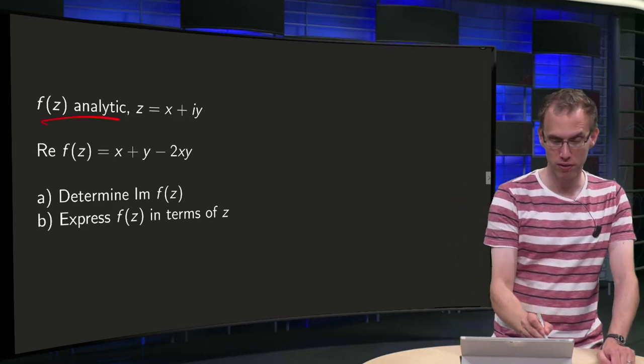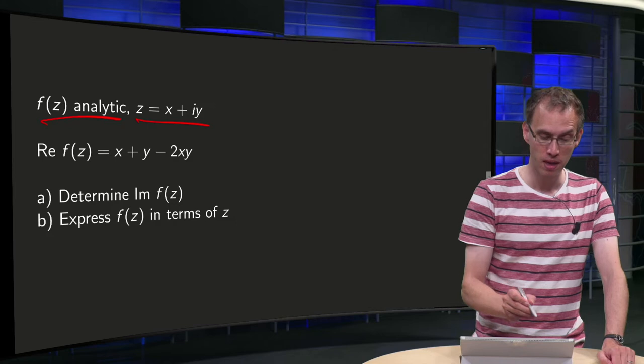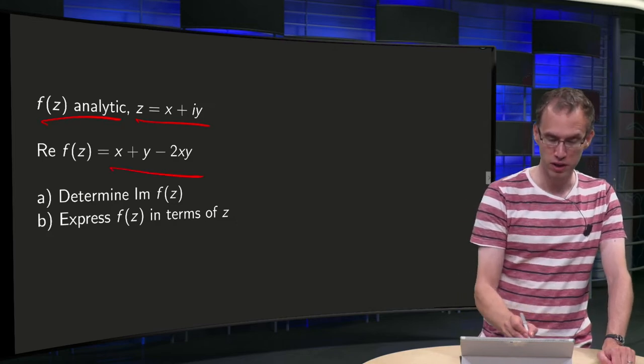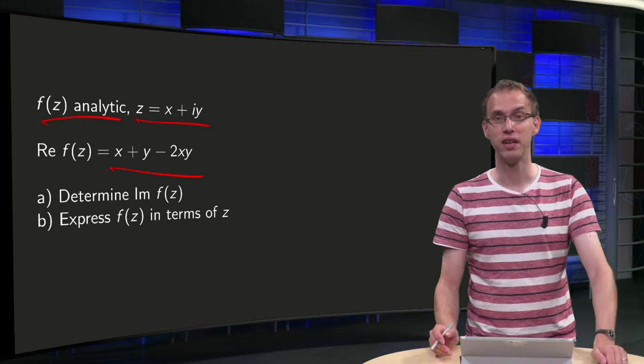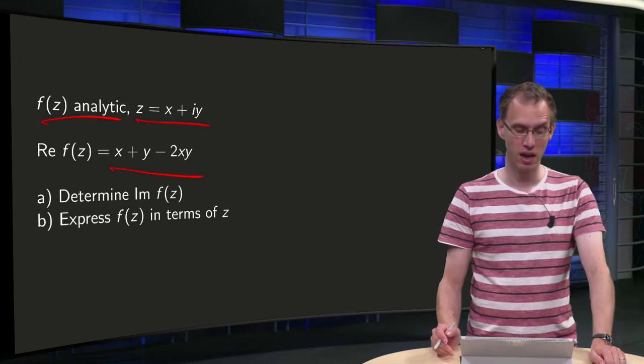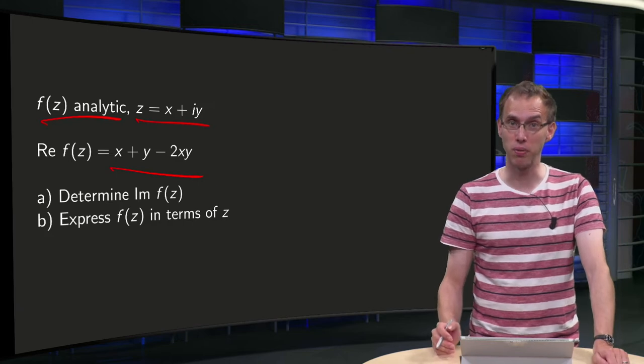So we are looking for an analytic function f(z). We set as usual z = x + iy and we have the real part of f(z) equals x + y - 2xy. Question a: find the imaginary part of f. Question b: express f(z) in terms of z instead of x and y.